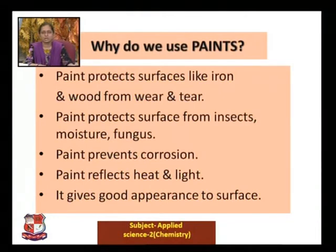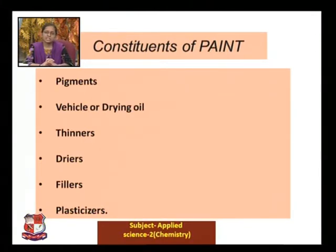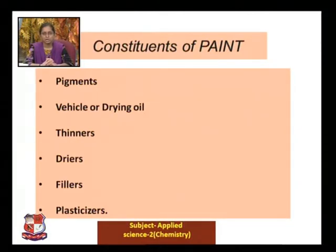Now, what are the constituents of paint? Paint is comprised of the following components: pigments, vehicle or drying oil, thinners, dryers, fillers, and plasticizers. Each component plays a very special role, and we will describe the function of each constituent.